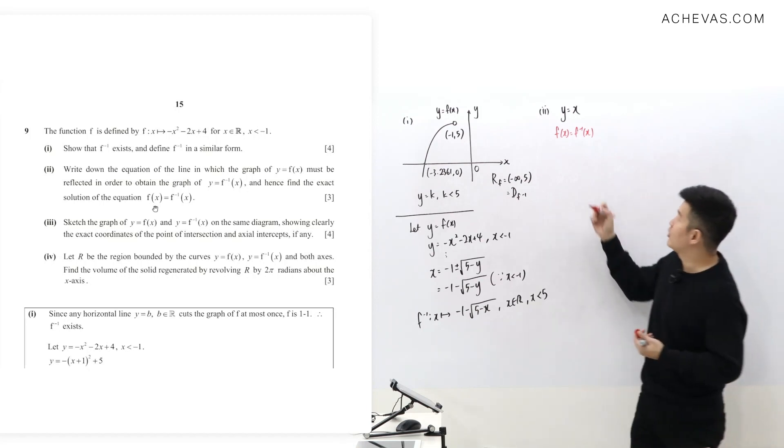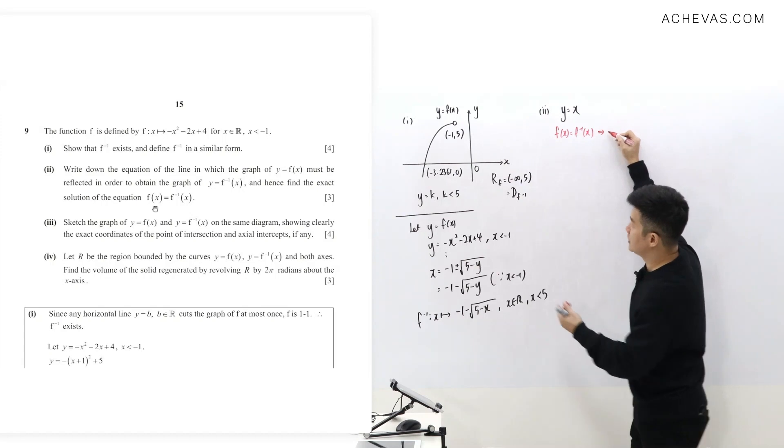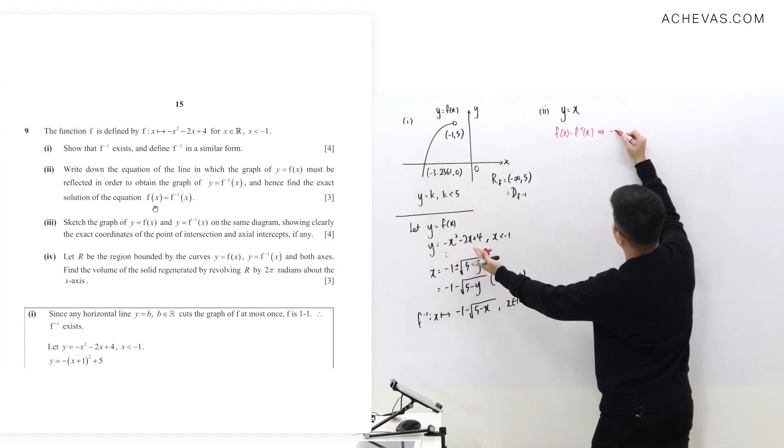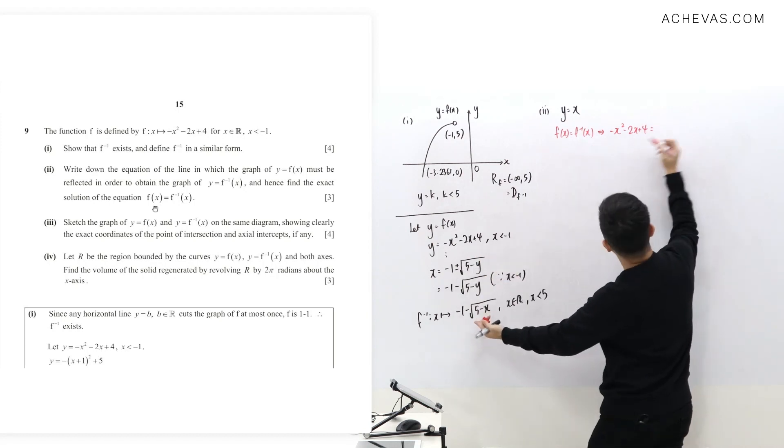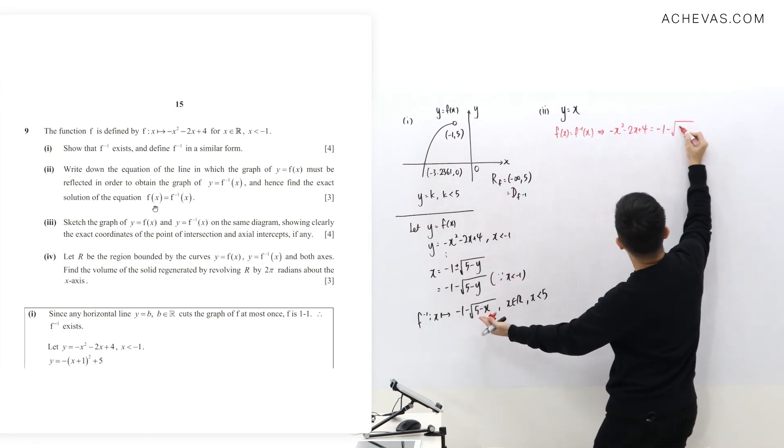That means you cannot treat this as simply a question that will require you to equate f(x), this negative x squared minus 2x plus 4, to be equal to f inverse, which is negative 1 minus square root of 5 minus x.